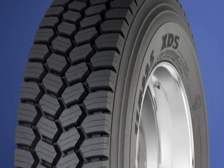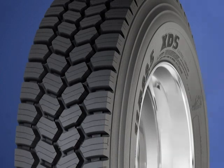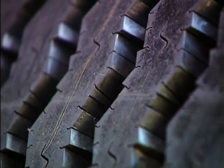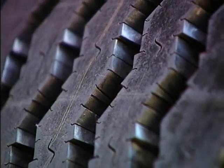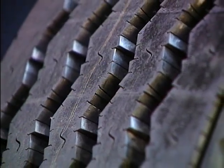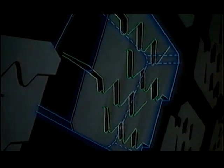One approach is to change the shape of a tread block. Another is to support individual blocks by the surrounding blocks. Rib designs are enhanced by creating grooves and/or sipes at the edges of the rib. These modifications reduce and stabilize tread movement, improving the wear at the edge of a tread block and resulting in a more uniform appearance.